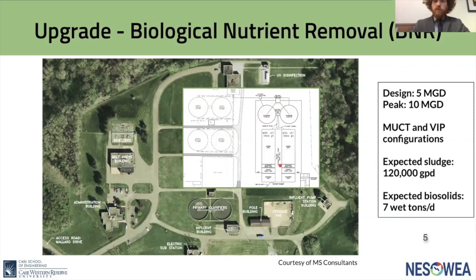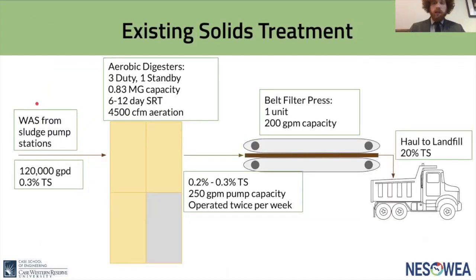In this open field, the biological nutrient removal facility will be built and will produce activated sludge. We expect that 120,000 gallons per day of sludge will need to be wasted to the digesters, and with the current system, we expect seven wet tons of biosolids produced every day. Unlike the old system, the upgraded facility will only produce waste activated sludge and no primary sludge. Due to this change, models of the plant predict the total solids concentration will be reduced by a factor of four, to only 0.3% total solids.